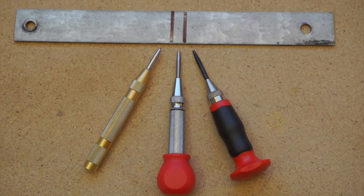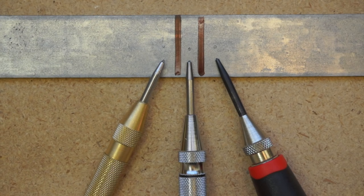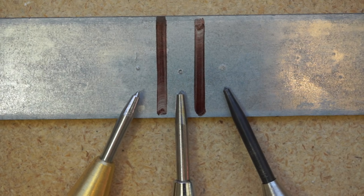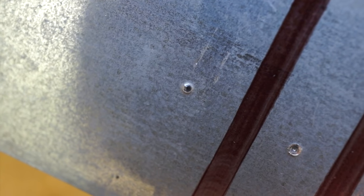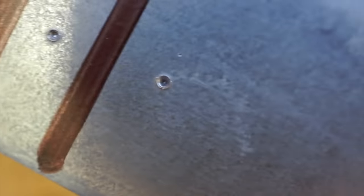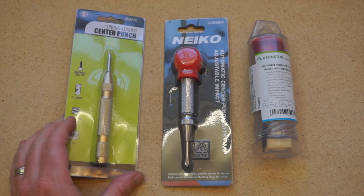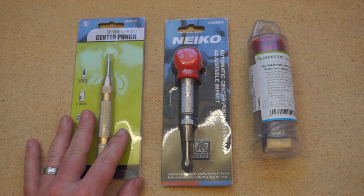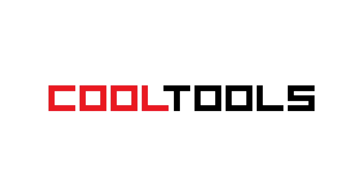So there you go, three automatic center punches compared. If you've ever used the cheap ones before, spending a little more money does seem to get you a better product. These are a big help for accurately drilling holes in metal or wood. I've got links to all three options in the description. And remember, you can see thousands of reader recommended tools like these at cool-tools.org.